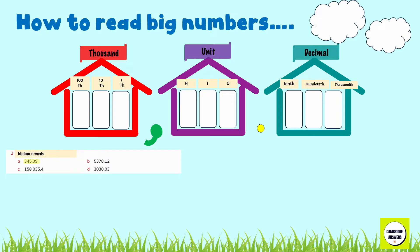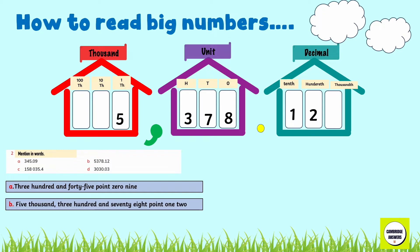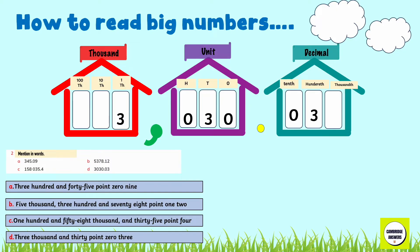Question number two — Write these numbers in words: 345.09; 5,378.12; 158,035.4; and 3,030.03.